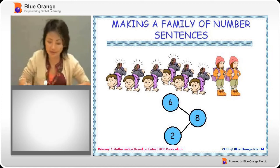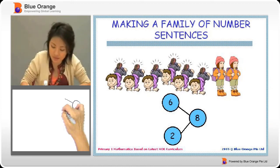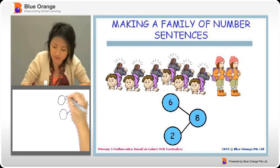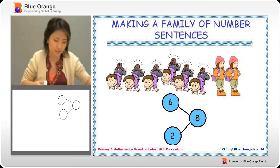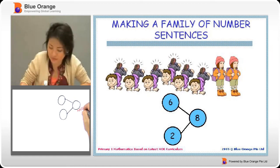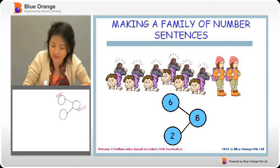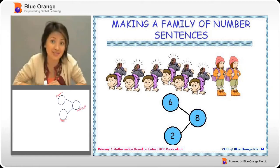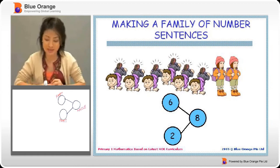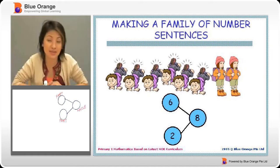Now remember I said that when you have a number bond, this means the whole. Whole means it's a big part. This is the part, a smaller part, and this one is another small part. The two small parts put together gives you a big part. So in this case, we have six and two that makes eight.